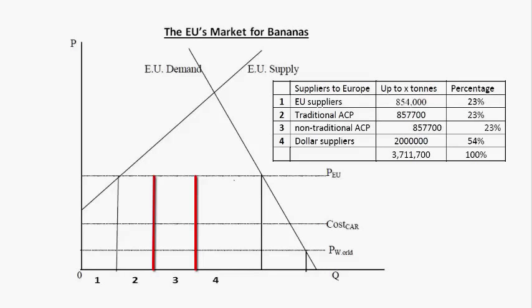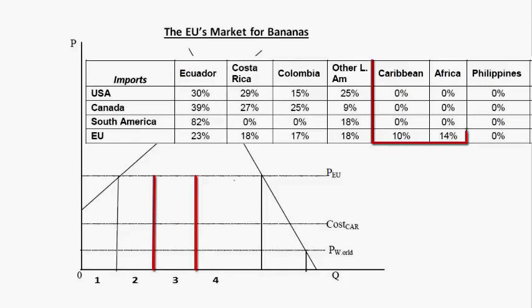Notice that dollar countries generally supplied more bananas than European producers and traditional producers combined. The Caribbean is supplying 10% of Europe and Africa is supplying 14%, so that is 24% from Africa and the Caribbean — all of these are non-traditional suppliers. Approximately 22% of Europe's bananas were going to come from traditional ACP countries, so we are in the ballpark with the Caribbean and Africa at approximately 24%.